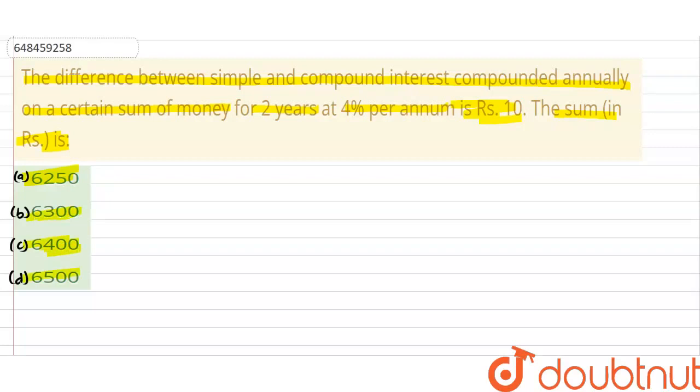This is 6400 and last option is 6500. Here we have given that the difference between CI and SI is 10 rupees for 2 years at 4% per annum. So we are asked to find the principle.